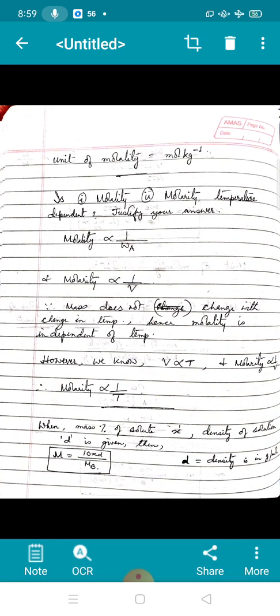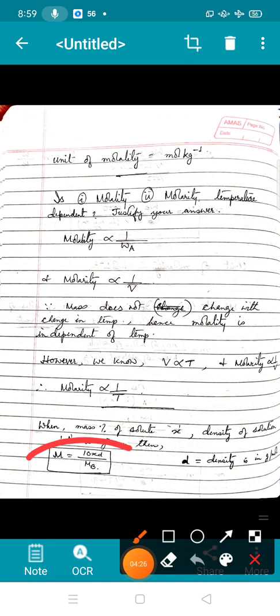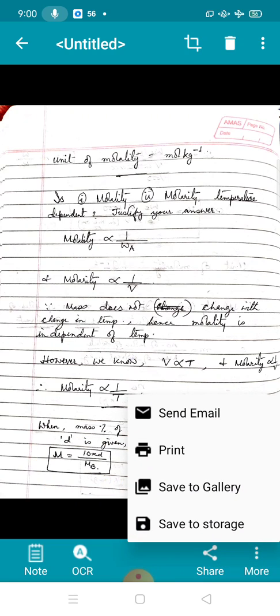As you can see in your note, another formula for molarity is 10xd by M_B, where x stands for mass percentage of solute, d is the density of solution in gram per milliliter or gram per cc, and M_B is the molar mass of the solute. This formula we use when the mass of the solute is given in terms of percentage and density of the solution is given.